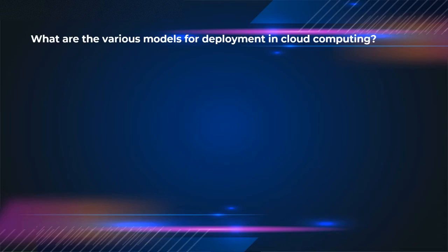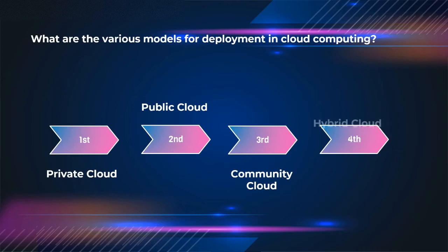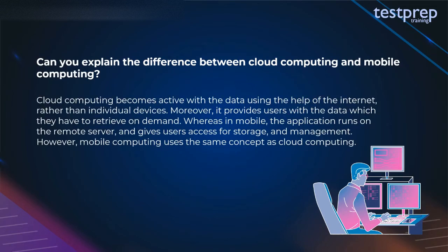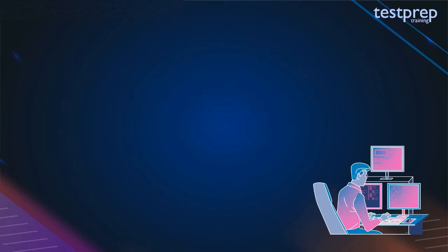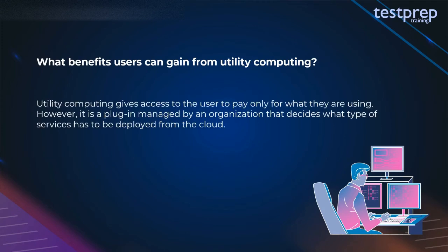Question 18: What are the various models for deployment in cloud computing? The different deployment models include: first, private cloud; second, public cloud; third, community cloud; fourth, hybrid cloud. Question 19: Explain the difference between cloud computing and mobile computing. Cloud computing becomes active with data using the internet rather than individual devices, providing users data on demand. In mobile computing, the application runs on a remote server and gives users access for storage and management.